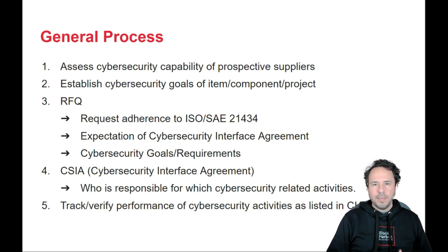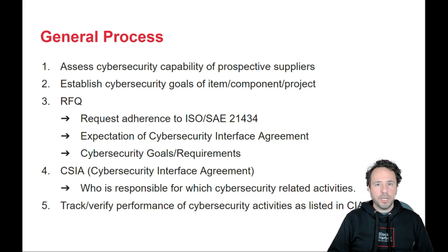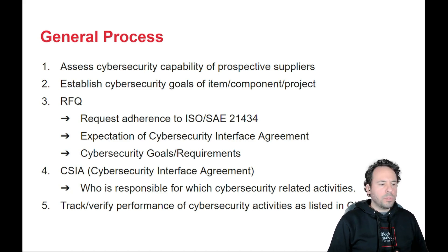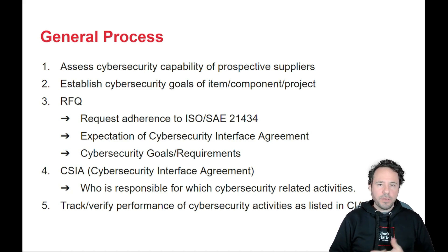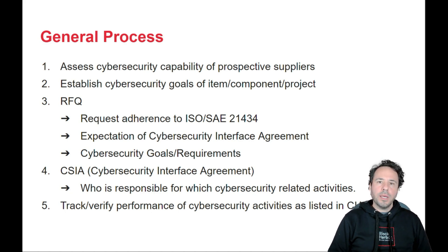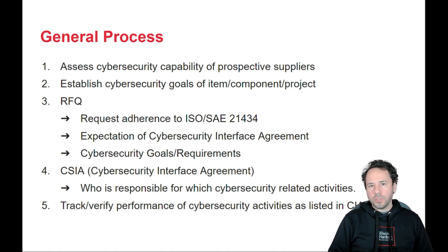Let's walk through the general process. Typically, you're going to assess the cybersecurity capabilities of your partners — make sure that you are working with those partners who do have cybersecurity in mind and good processes for managing the cybersecurity of their own products. You're going to establish the cybersecurity goals of the item, component, or overall project. Then we're going to do RFQ. In the RFQ, there are three requirements: a formal request for the supplier to adhere to ISO 21434, the mention of a cybersecurity interface agreement, and the actual cybersecurity goals and requirements of the item or project.